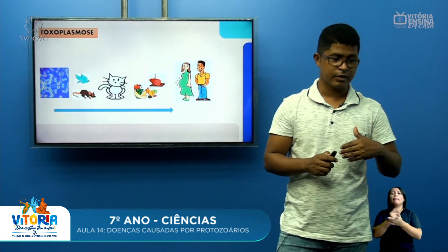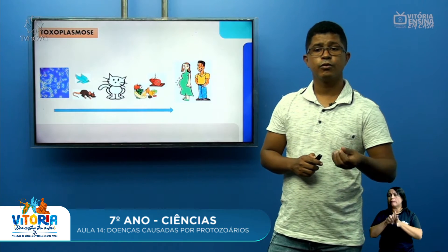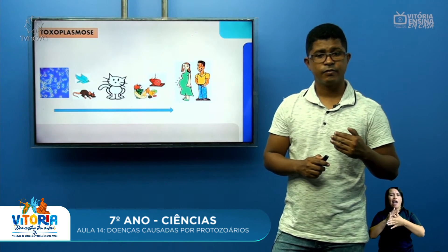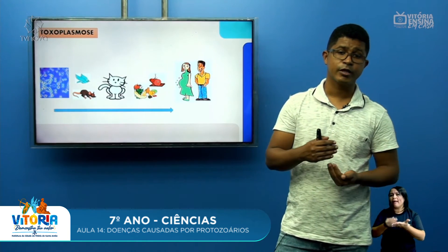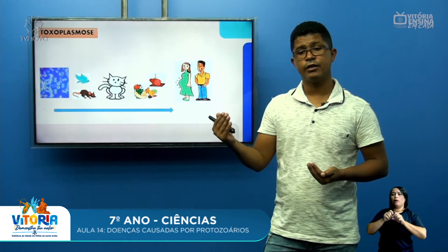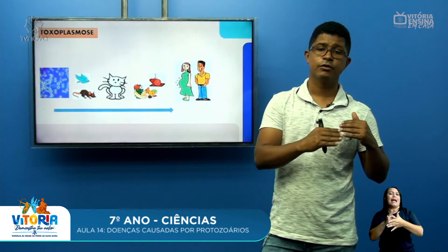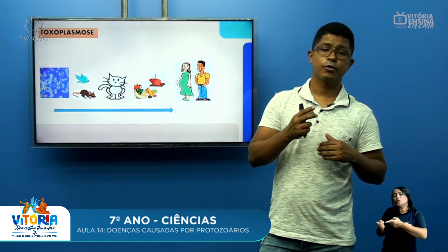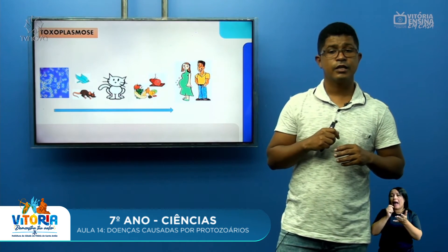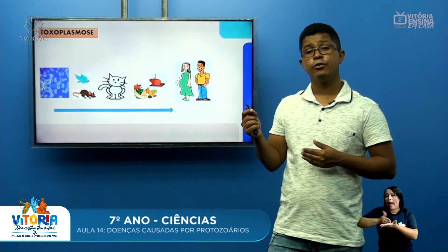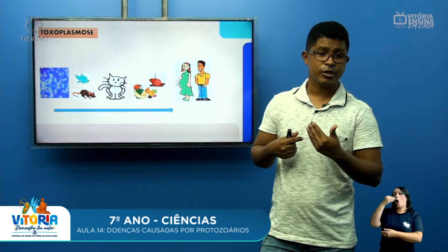Uma grande causa de infecção por toxoplasmose é o consumo de carne mal passada. Você pode adquirir toxoplasmose sem criar um gato, através de alimentos contaminados, mal lavados e também pela ingestão de carne mal passada. Tem gente que adora um churrasco com carne sangrando — essa carne mal passada pode conter o Toxoplasma dentro da musculatura e, ao ingeri-la, você adquire a toxoplasmose.